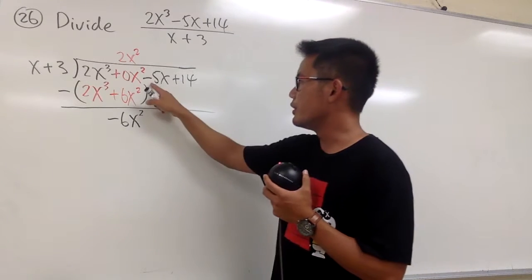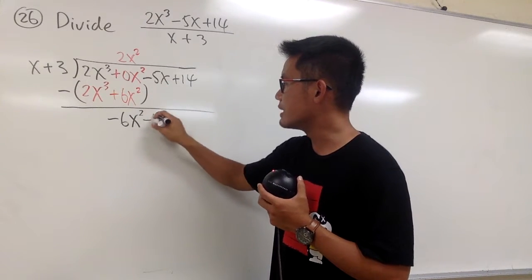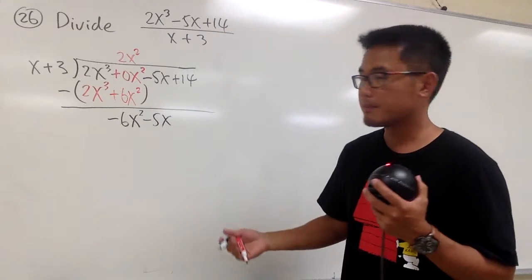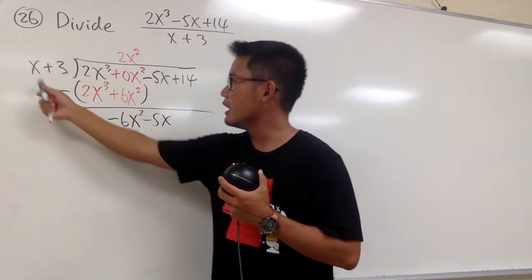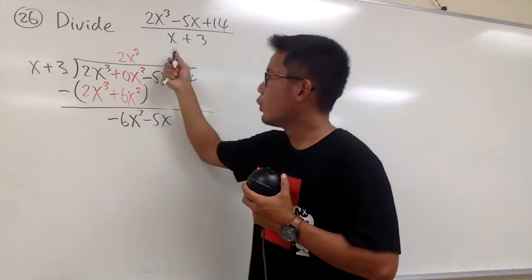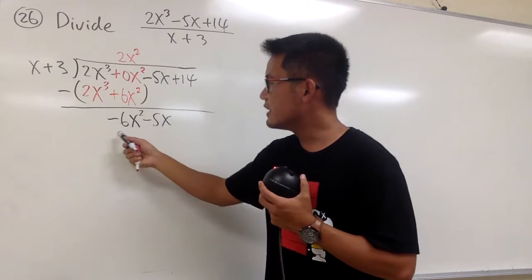And then, to continue, we'll bring the next term down, which is the minus 5x. And then do the same thing. Compare the first term right here, and the first term right here. What times x will give us negative 6x squared?